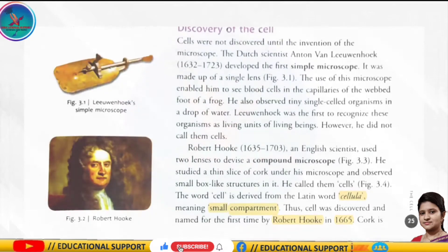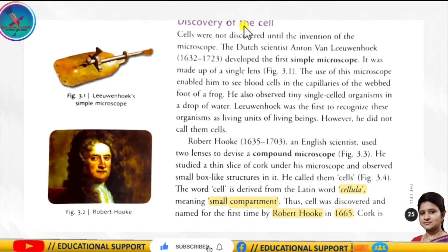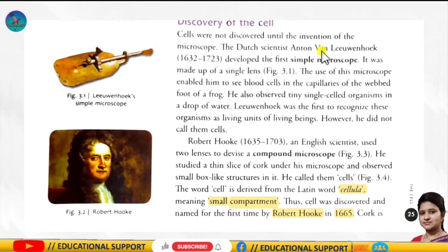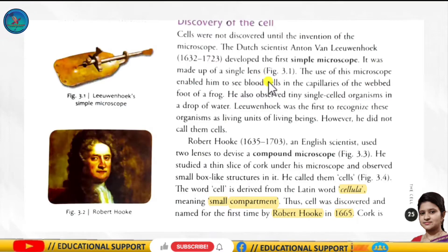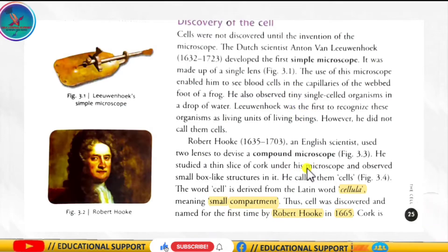Next, we discuss the discovery of the cell. The first microscope was made by Anton van Leeuwenhoek and was known as the simple microscope, made up of a single lens. Anton van Leeuwenhoek observed blood cells in capillaries in frogs, and he was the first to observe bacteria and protozoa, though he did not call them cells.